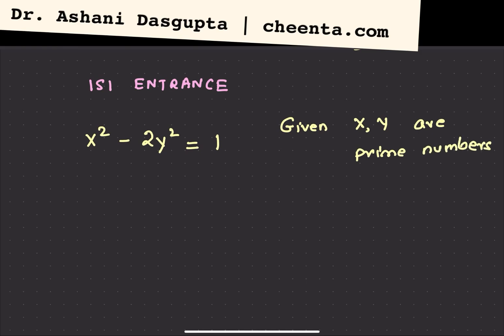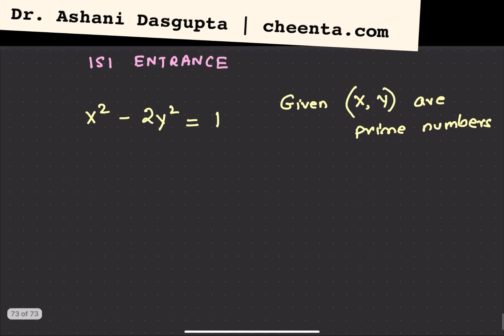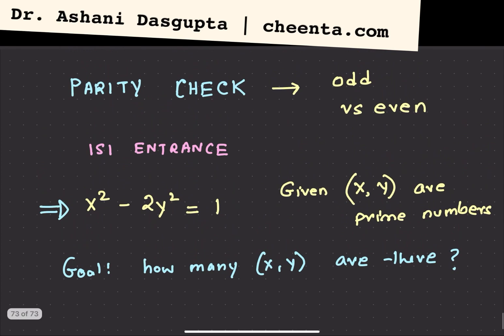We want to find out how many such x and y's are possible. That's the goal. How many such pairs of numbers x and y are there that satisfies this equation? And in this problem, we can very beautifully use this strategy of parity check. Let's see how we can do that.